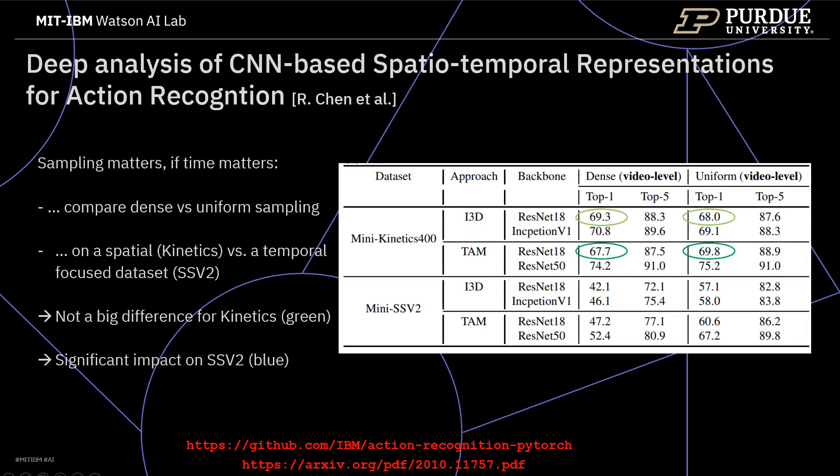To better understand this effect, we looked more closely at different sampling strategies. We compared the two best performing models, I3D and TAM, with two different sampling strategies — dense and uniform sampling — and ran this on two different datasets: kinetics, which has a strong focus on spatial properties, and something-something, which is more focused on temporal aspects of actions. Overall, we can see that there is not a big difference in terms of sampling on the kinetics dataset no matter which model we choose. It makes a big difference when we look at something-something. This is actually good news because uniform sampling is usually more efficient than dense sampling as it needs fewer overall input frames. So the question is, how can we use this finding to actually build more efficient action recognition architectures?